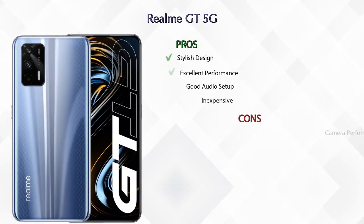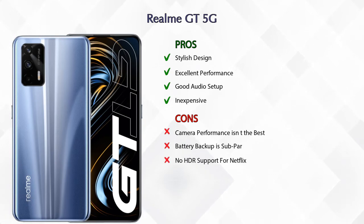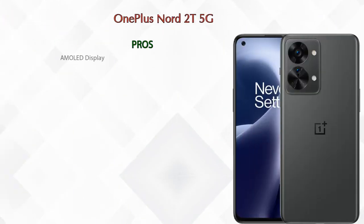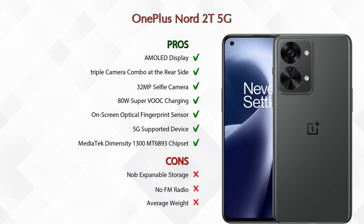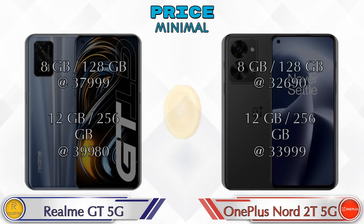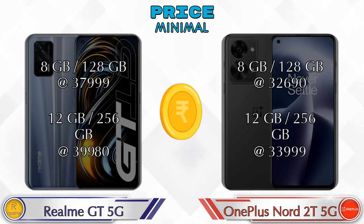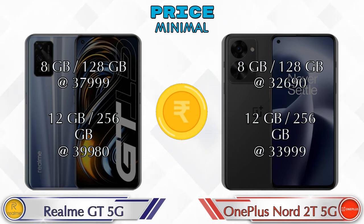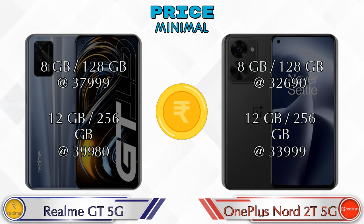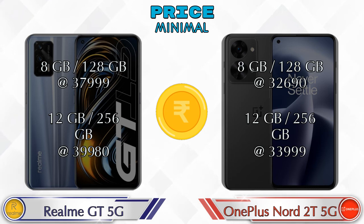Looking at pros and cons, the Realme GT 5G has 4 pros and 3 cons, while the OnePlus Nord 2T 5G has 7 pros and 3 cons. Both phones come in two variants. The GT 5G is priced at ₹37,999 for 8GB/128GB and ₹39,980 for 12GB/256GB. The Nord 2T 5G is priced at ₹32,690 for 8GB/128GB and ₹33,999 for 12GB/256GB.